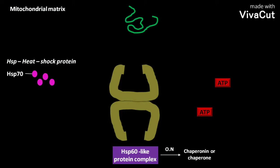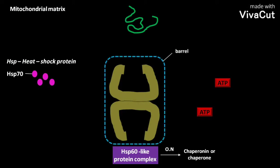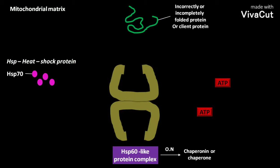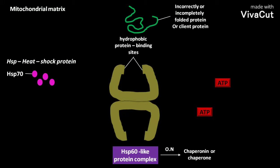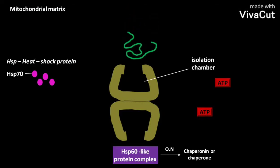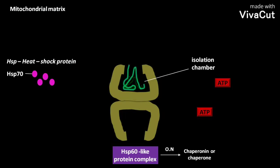Hsp60 has a barrel-like structure. Incorrectly or incompletely folded proteins, also called client proteins, present in the matrix first come in contact with hydrophobic protein binding sites of the barrel. The client protein is then captured in the isolation chamber of the barrel, which prevents aggregation of misfolded protein and provides a favorable environment for refolding.